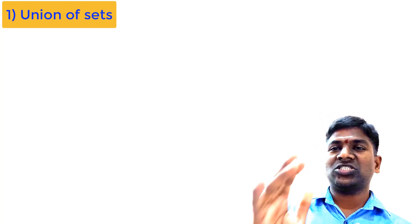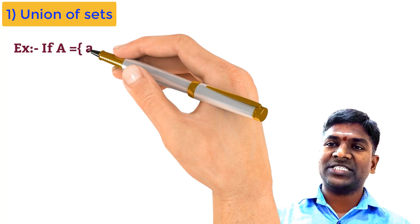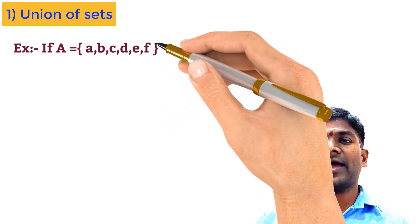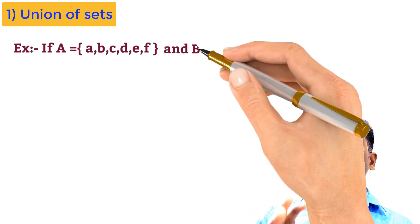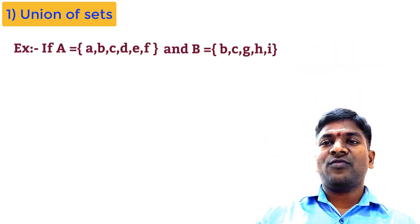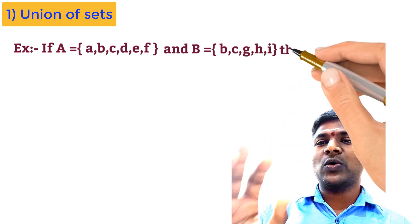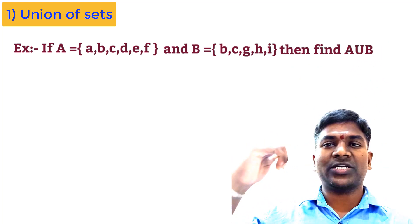Let us take an example to find the union of sets. Set A consists of elements A, B, C, D, E, F. Set B consists of elements B, C, G, H, I. Find the union of A and B. This is the question; you can see the question on the screen.